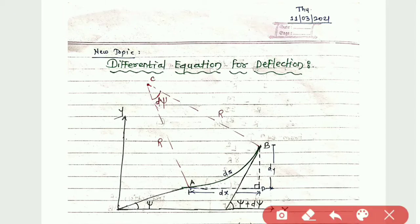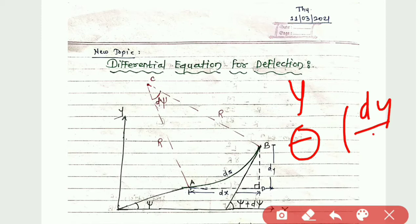In the last video lecture, we saw about the deflection which is denoted by y, and we have seen about theta, that is the slope. Sometimes it is denoted by dy/dx. I hope you understood that lecture very well.